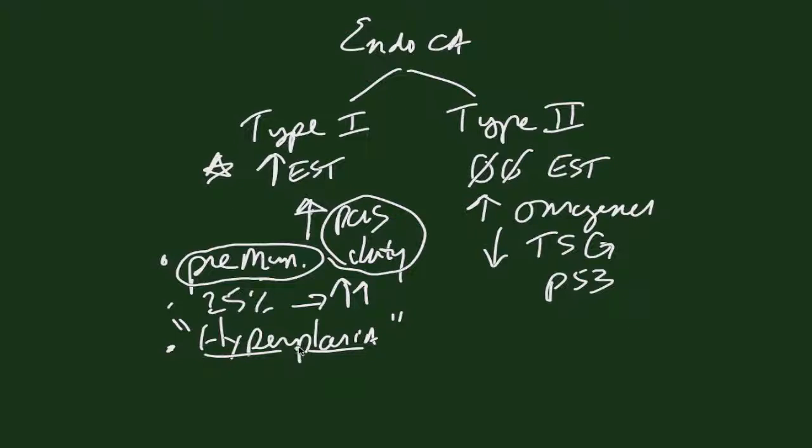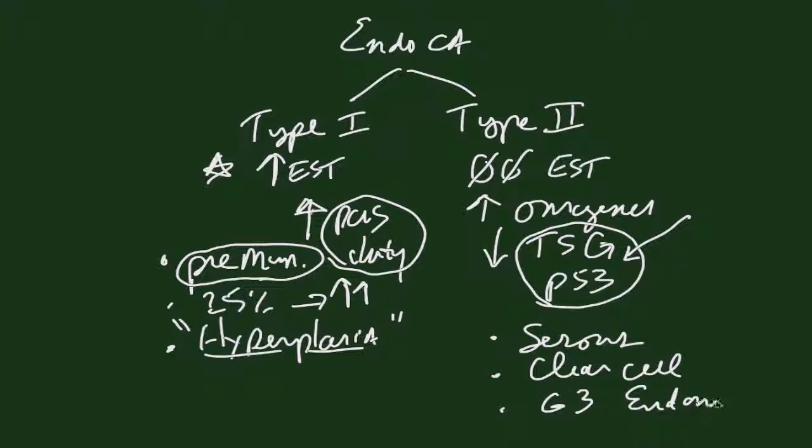The understanding of type 2 cancers hinges on understanding that this has nothing to do with hormones, but has to do with genomic instability and has to do with mutations in genes that control growth. These cancers, if we look at them histologically, are typically serous carcinomas of the endometrium or clear cell carcinomas of the endometrium or grade 3 endometrioid. The histology over on this side is always endometrioid and typically grade 1 or grade 2, but not grade 3.